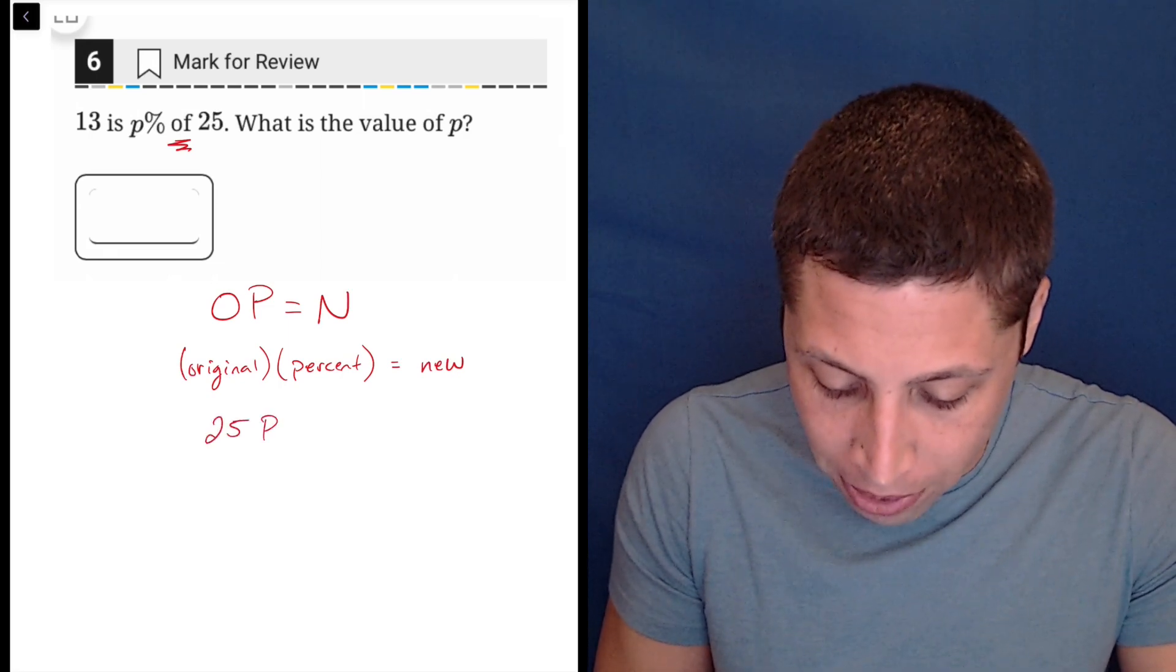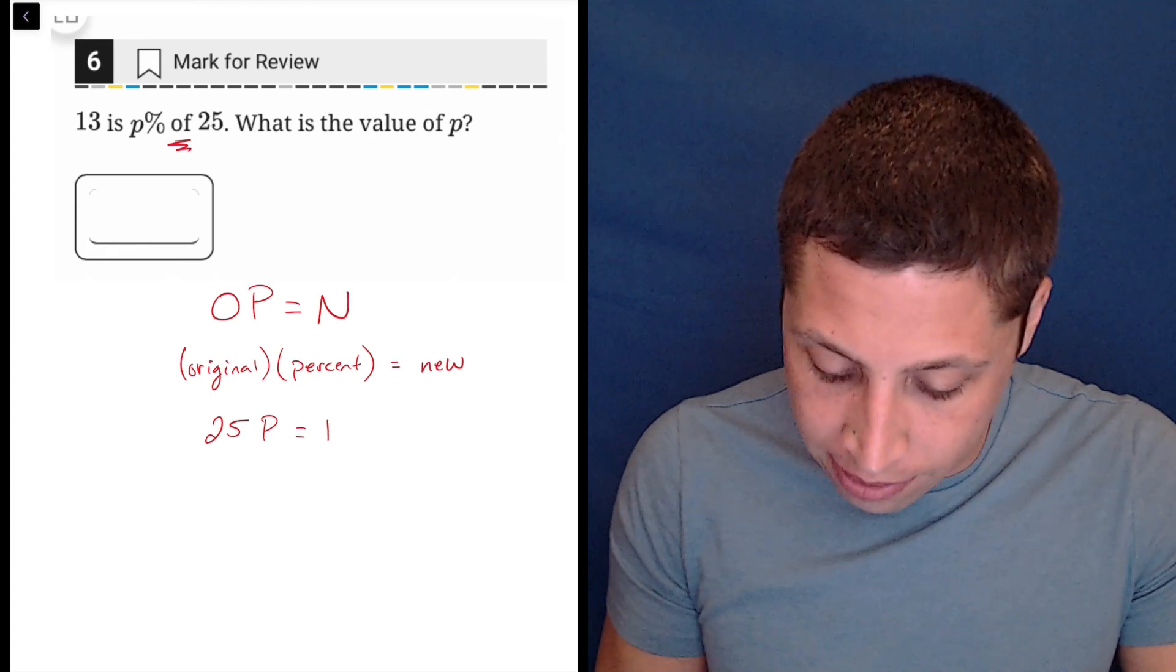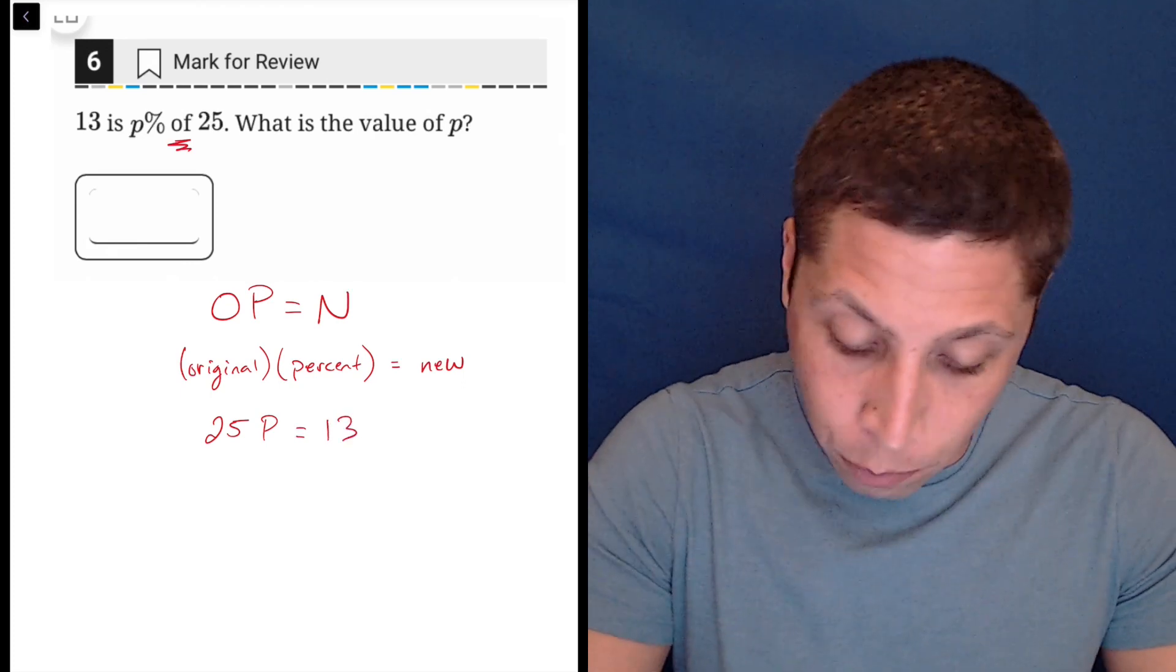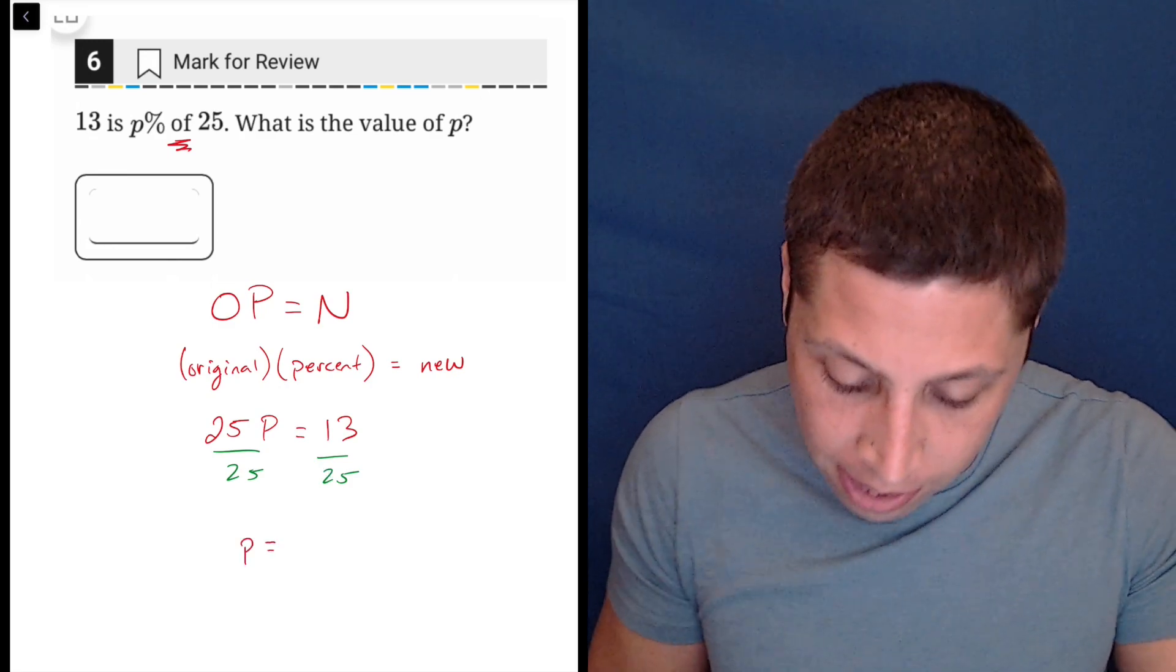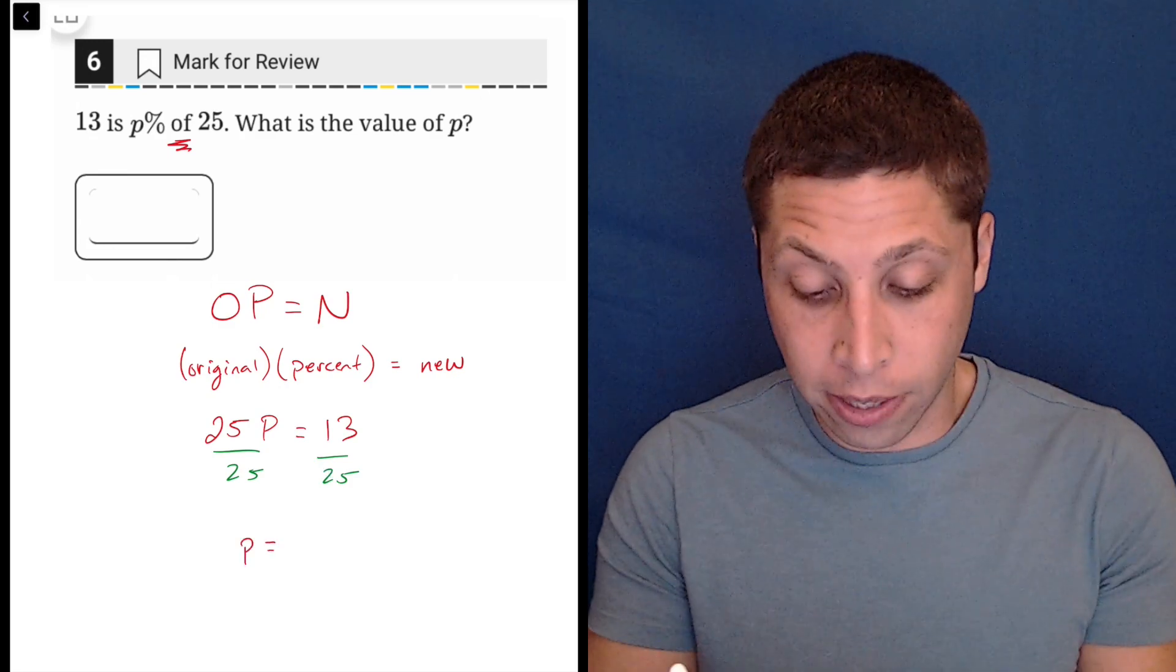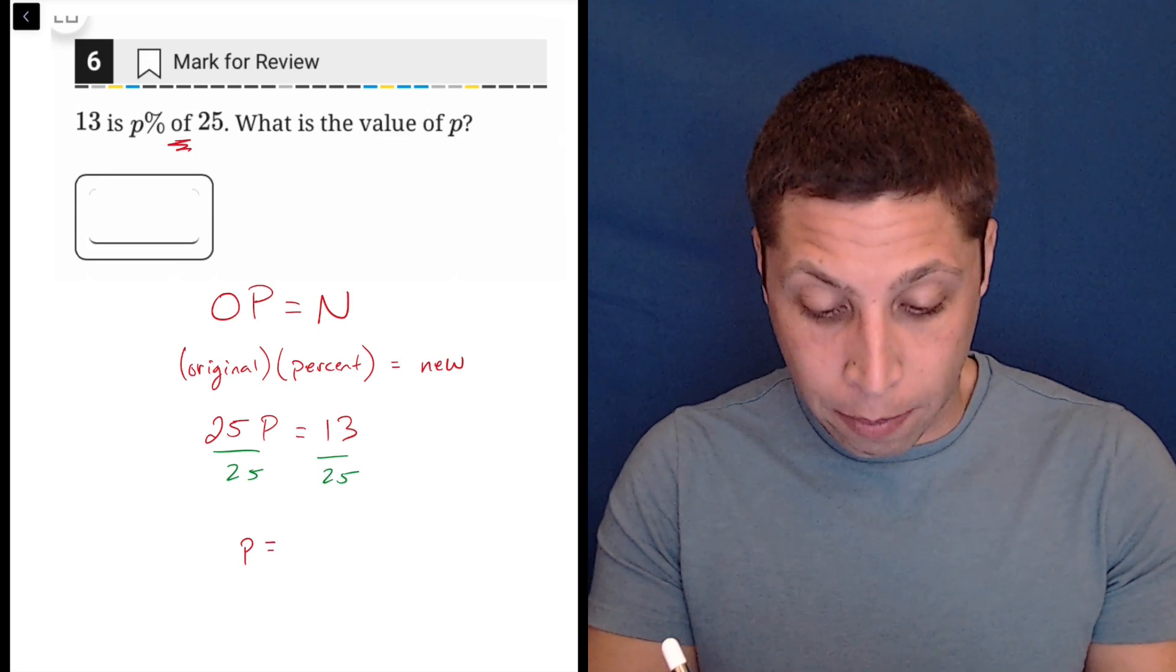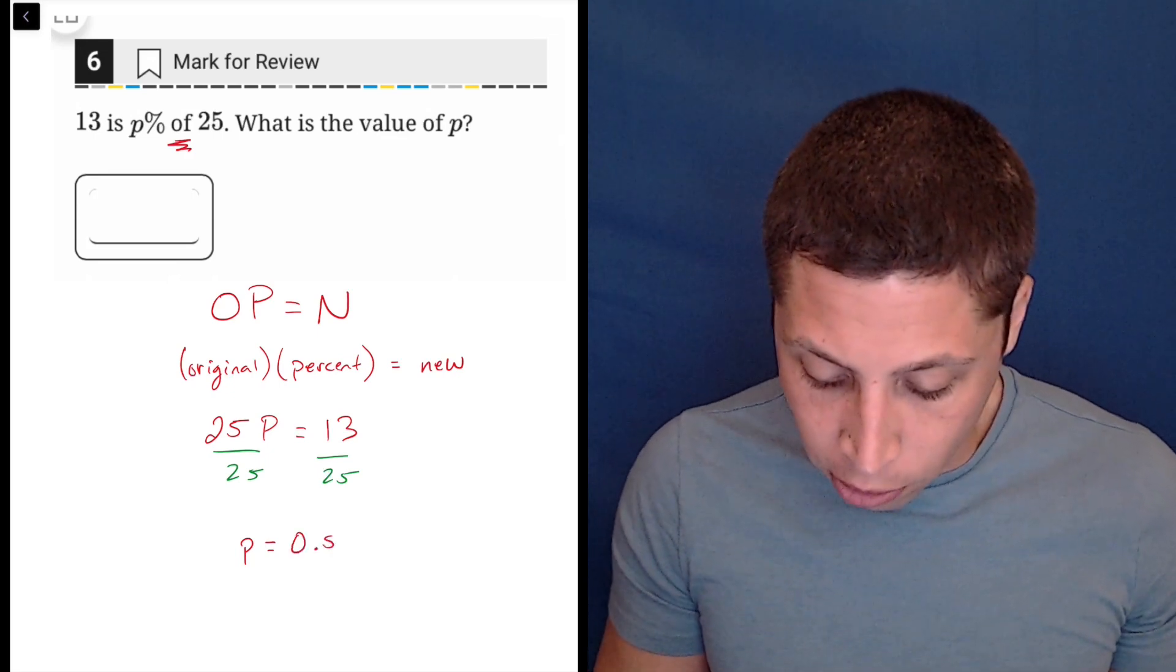So we're going to solve for P. 25P is equal to 13. And then we just divide both sides by 25 to get that. So we're going to get that P is equal to, grab your calculator, 13 divided by 25 is 0.52.